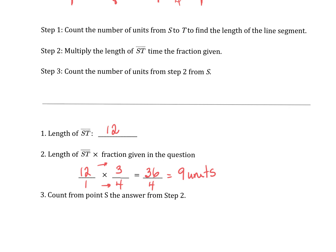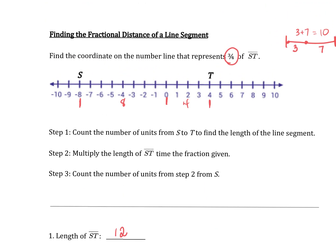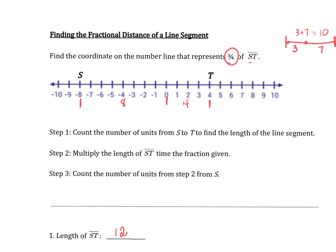Now, this is the number of units that is represented by the 3 fourths of the total. That's not what the question asks. We still have one more step to go. And that is to count this number of units of 9 from our starting point. So how do we determine our starting point? Well, it's based on the question. It wants us to find the coordinate on the number line that is 3 fourths of ST. So we're going to start with S,